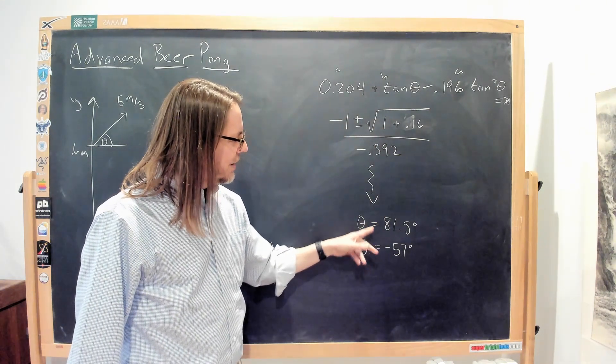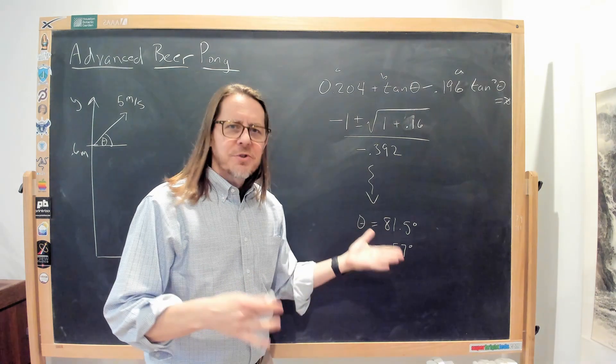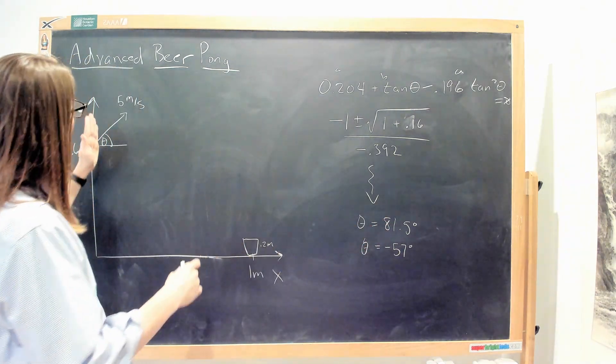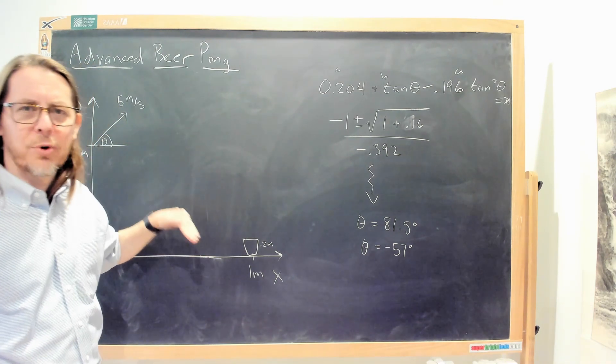I had two angles, 81.5 and negative 57, and we discussed why are there two, and it actually made sense. You know, 81.5 is when you're throwing it up high in an arc. Negative 57 was your report, throwing it down.